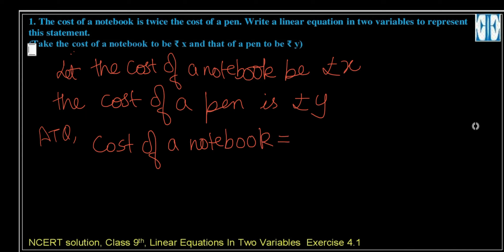...is means equal, twice means two multiplied by the cost of a pen. So the cost of a notebook - how much is it? x equals 2 multiplied by the cost of a pen, which means 2y. Simple, x equals 2y.